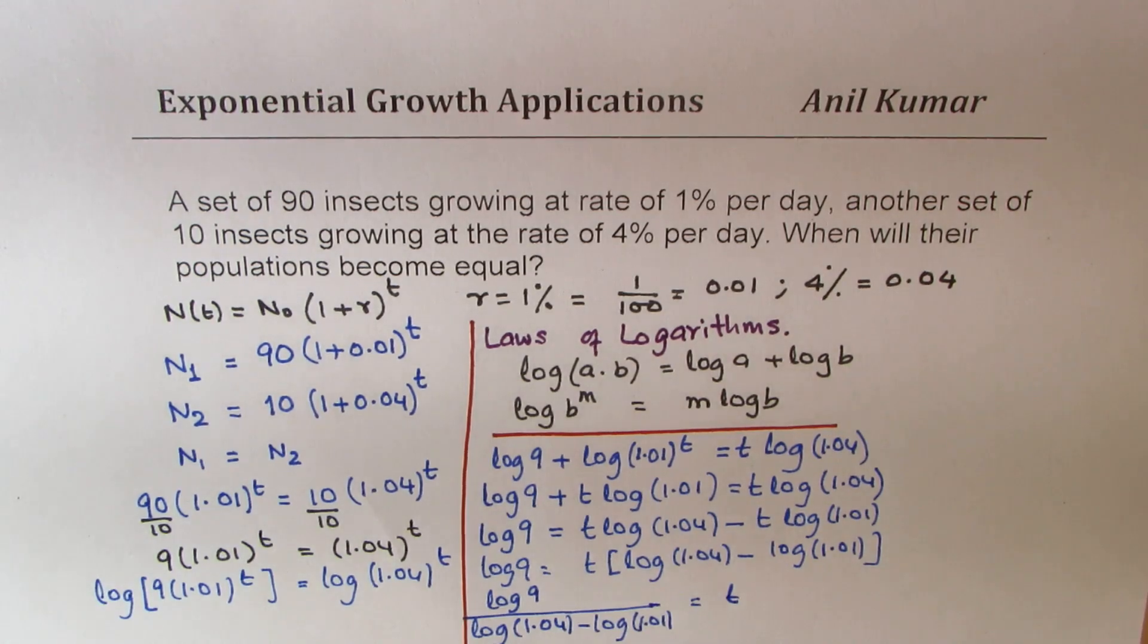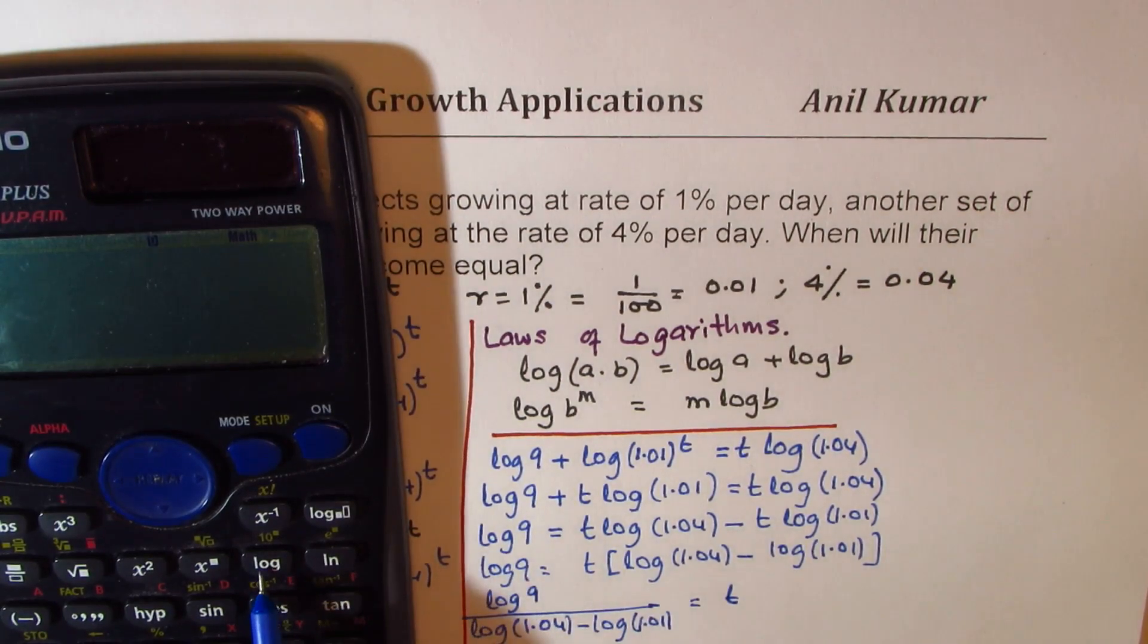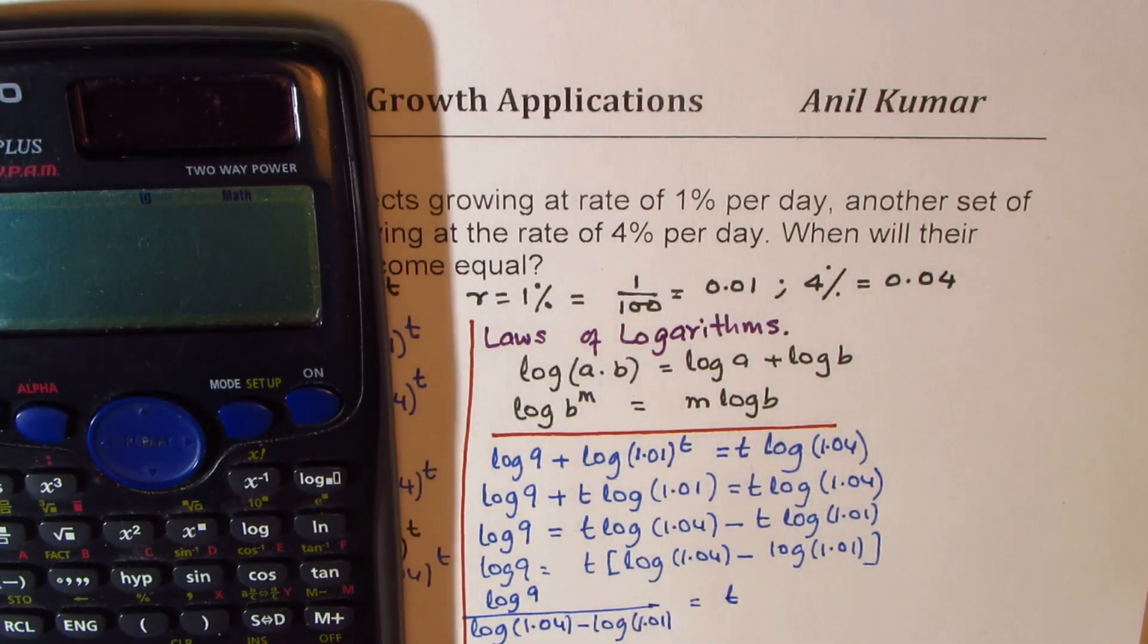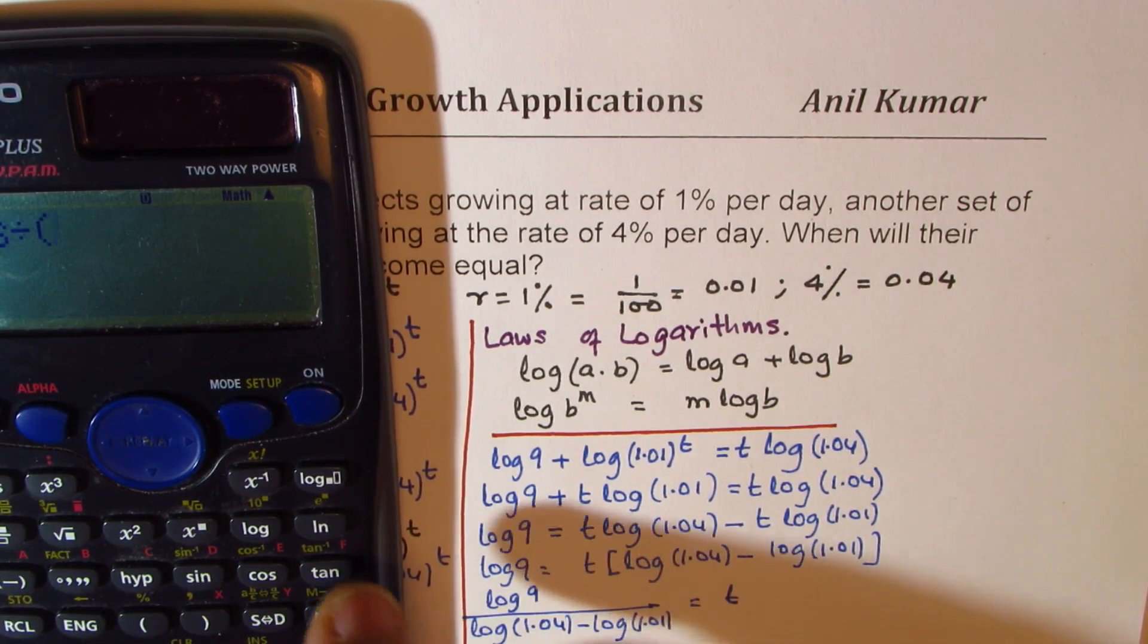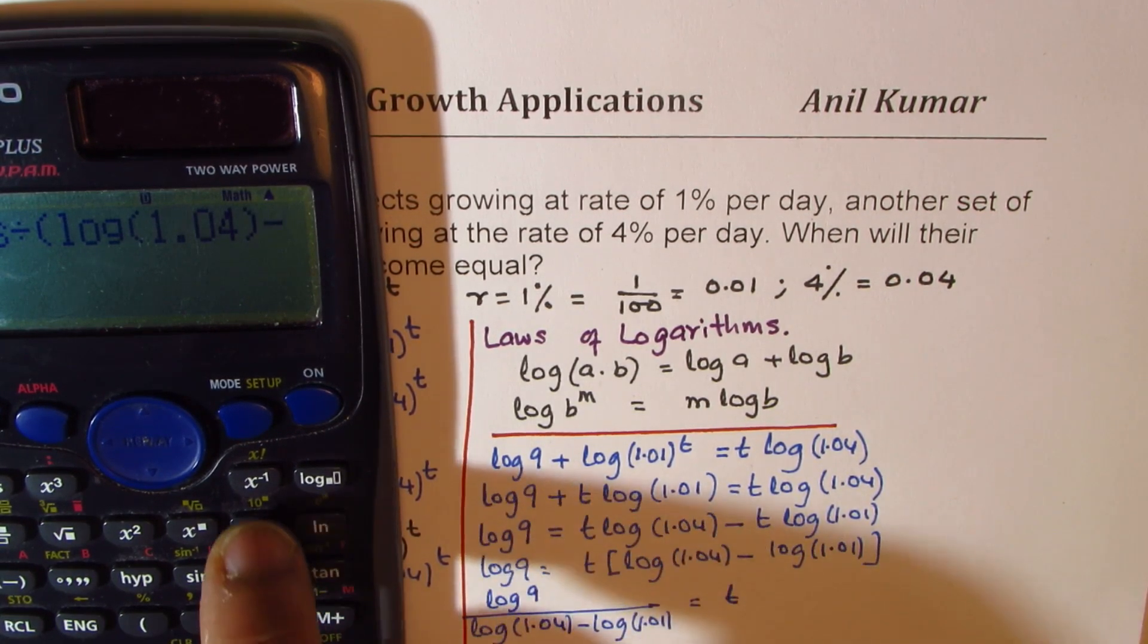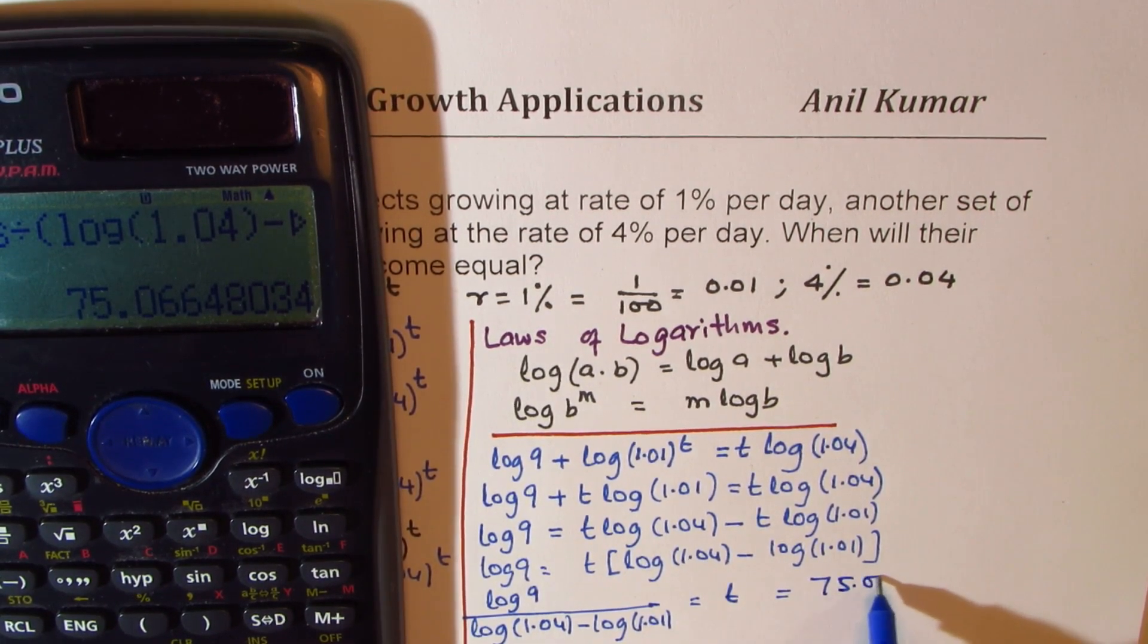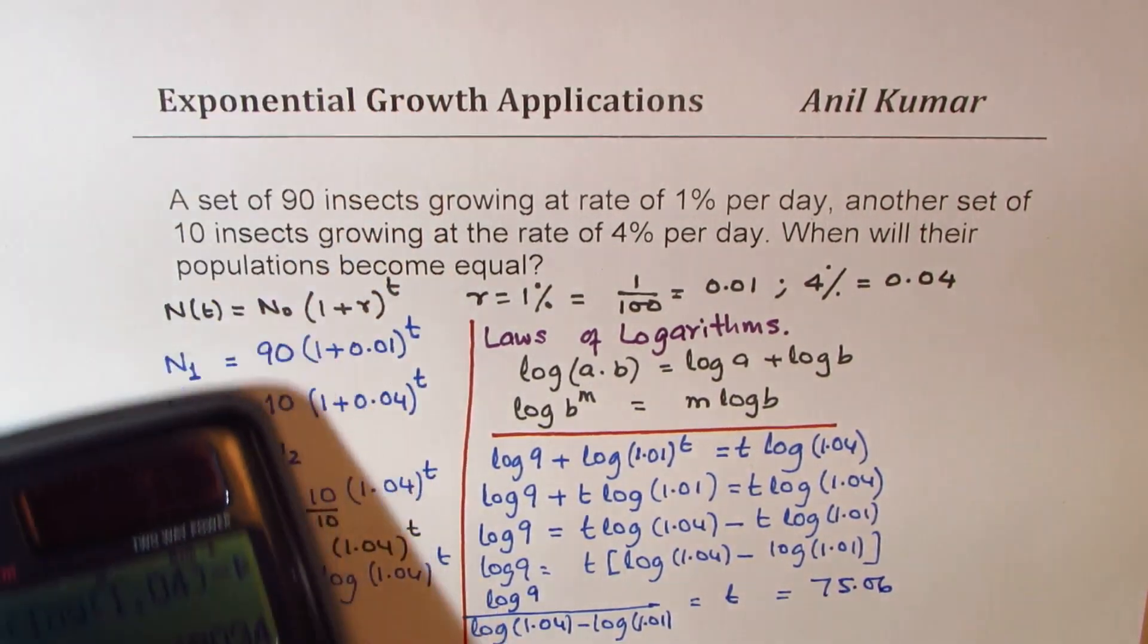So that is equal to t. Let's use calculator to find this answer. So log, we have two functions here. This is to the base 10, which we used just now, so we'll use this log. So we have log 9, and then we are going to divide this by, let me put it within brackets, log of 1.04 minus log of 1.01, so use brackets as I have done here. And what you get here is t equals 75.06.